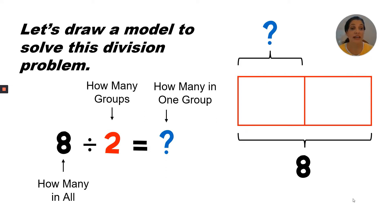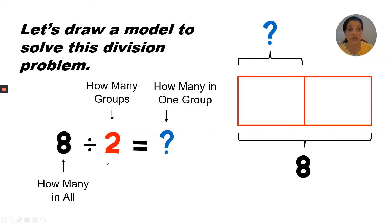I've drawn a tape diagram or bar diagram to help me solve for how many in one group. My dividend is 8 — that's how many in all — and I've labeled the bottom of my diagram with an 8. The next is the divisor, that's how many groups I've divided the 8 into, so I want to draw two boxes. In this type of diagram, the boxes are the number of groups. Finally, I want to solve for the unknown, which is how many in each group, so my label at the top for one group is a question mark, because it's unknown.